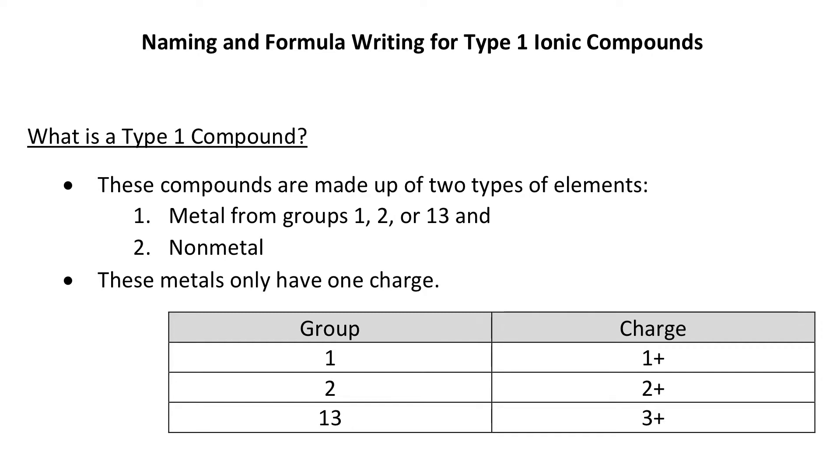An ionic compound is a chemical compound that involves two things: a metal and a nonmetal.